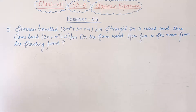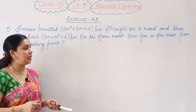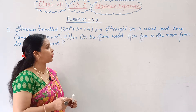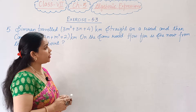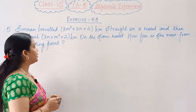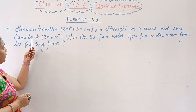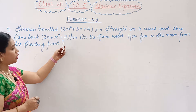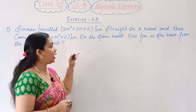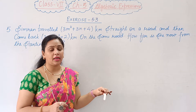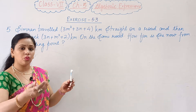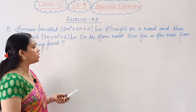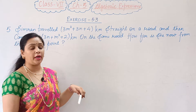Next, question number 5. Simran traveled 3m squared plus 3n plus 4 kilometers straight on a road and then came back 3n plus m squared plus 2 kilometers on the same road. So, how far is she now from the starting point?